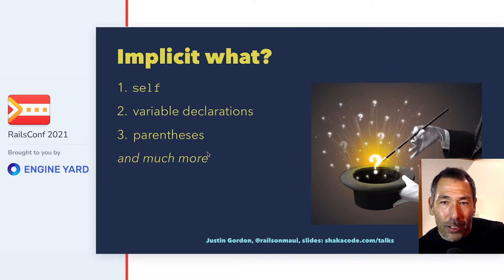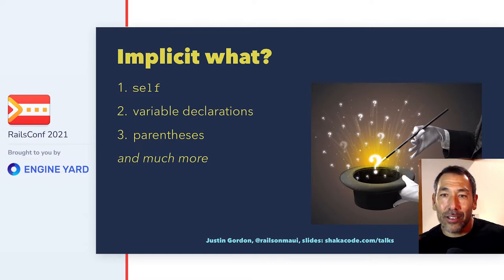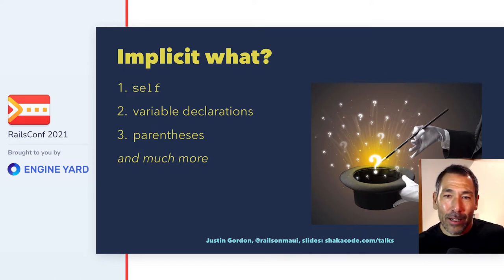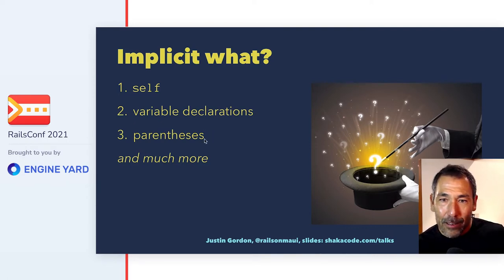But this code also has a lot of things that are implicit in it, and that's what makes it a great DSL but hard to understand. These are the things I'm going to cover in this talk — like what exactly is `self`, what are variable declarations (in Ruby you don't actually do anything to declare variables), parentheses, and more.